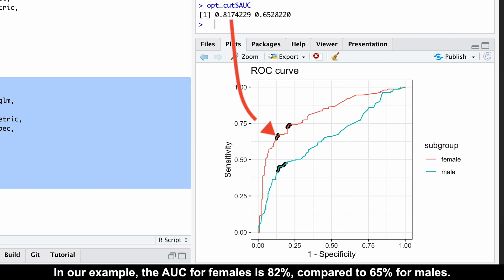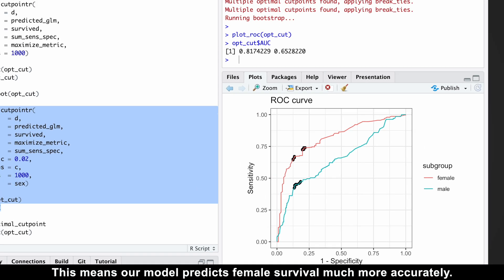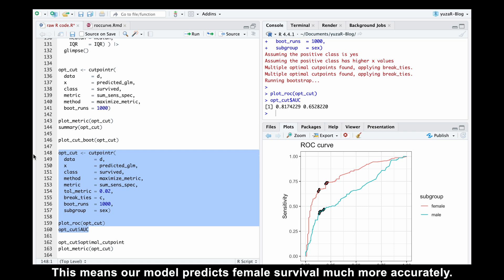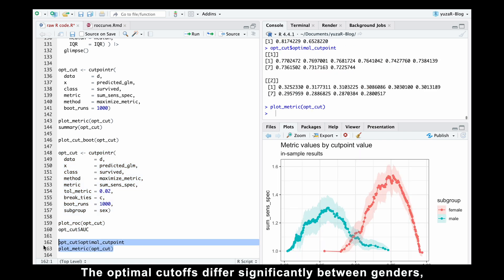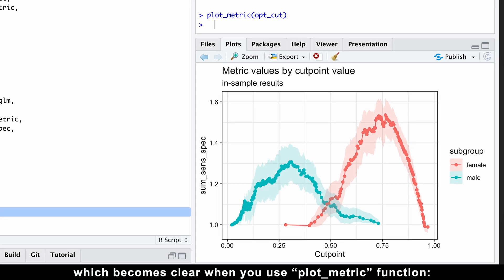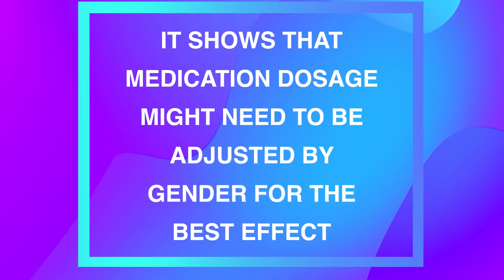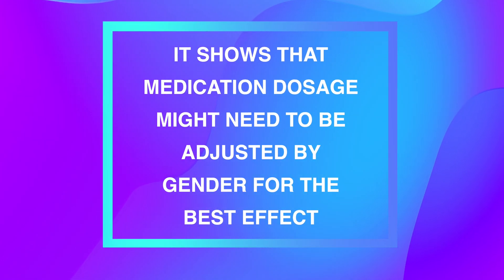In our example, the AUC for females is 82% compared to 65% for males. This means our model predicts female survival much more accurately. The optimal cutoffs differ significantly between genders, which becomes clear when we use plot metric function. Males, approximately 0.3. Females, approximately 0.75. This is crucial because it shows that medication dosage might need to be adjusted by gender for the best effect.